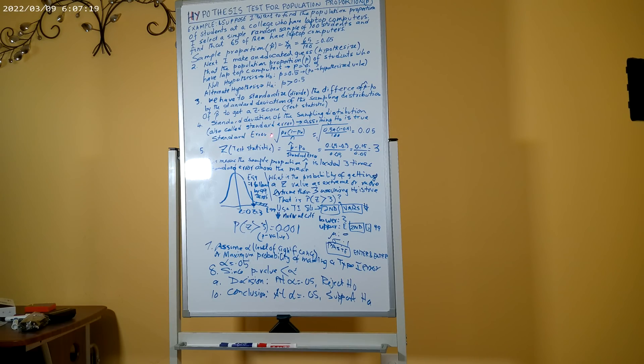It is given by this formula: standard error is square root of p₀ multiplied by (1 - p₀) divided by n. So in our case, it is square root of 0.5 times (1 - 0.5) divided by 100, and it works out to 0.05.